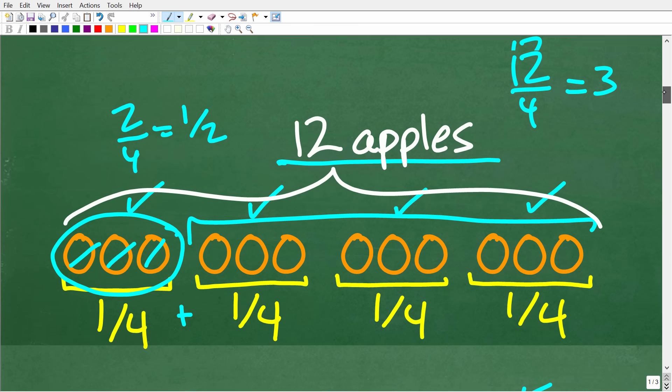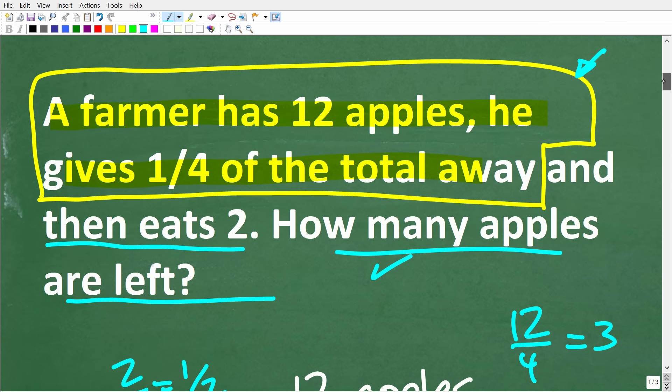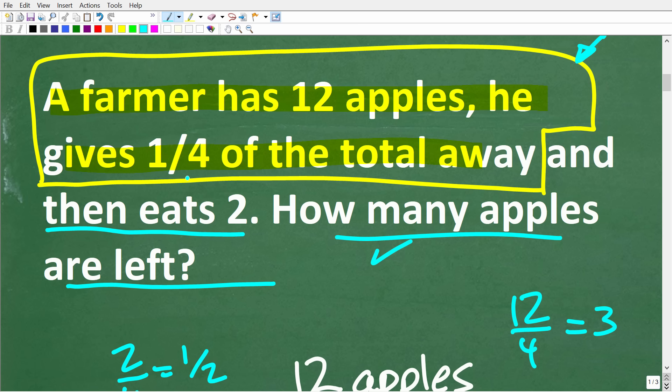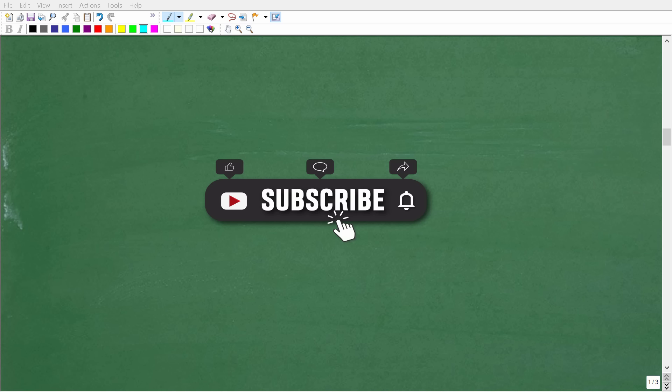Alright, so now that we understand this part right here, a farmer has 12 apples, he gives one-fourth of the total away, and one-fourth represents 3. So now, you know, that I kind of think about this problem, I guess we can maybe think about a three-part problem. Because now we have to take these three apples and take them away from these 12 apples. So that is 9. And then we'll deal with this part of the problem, how many apples are left after he eats two. But we're going to talk about that in just one second. Because first, we're going to take a look at this.